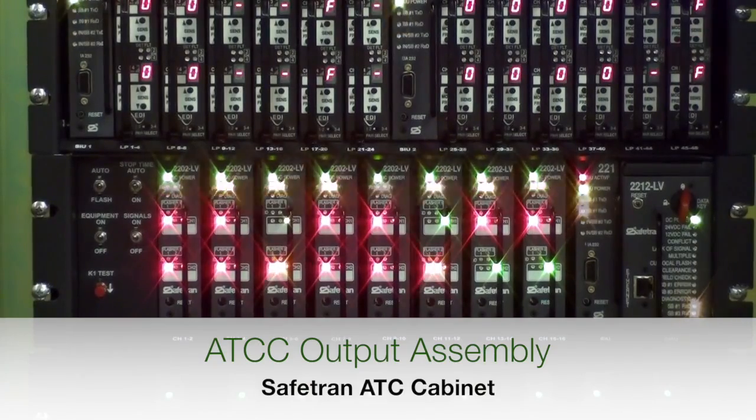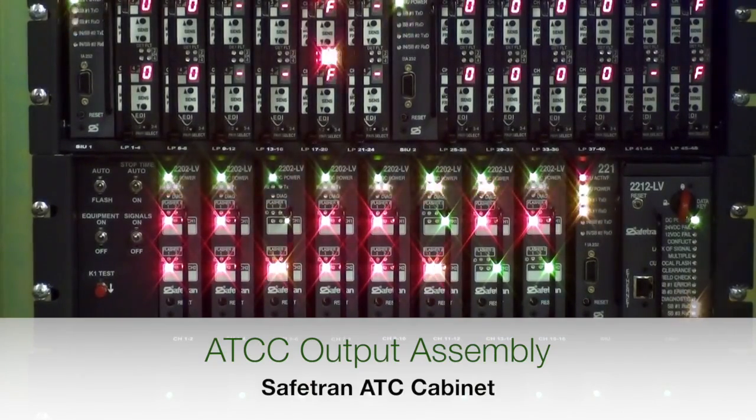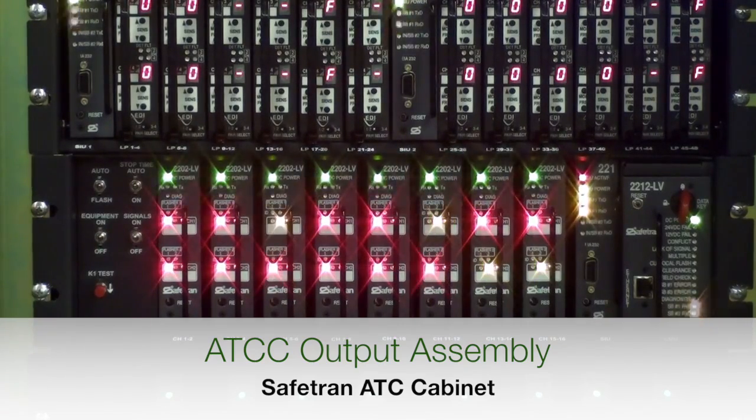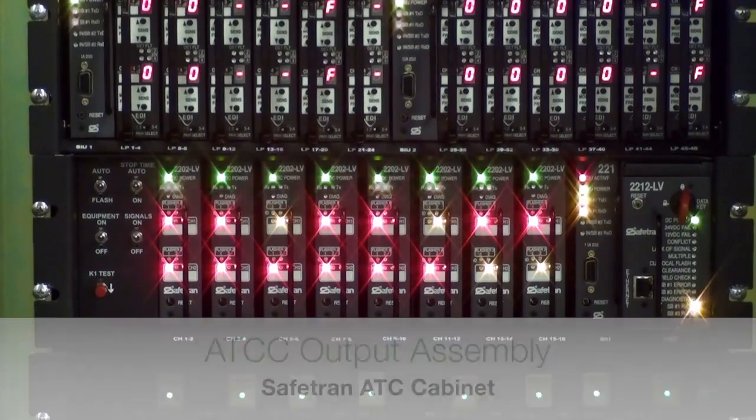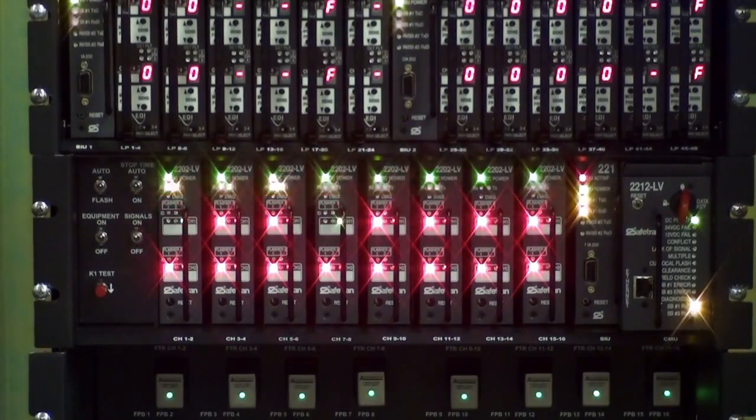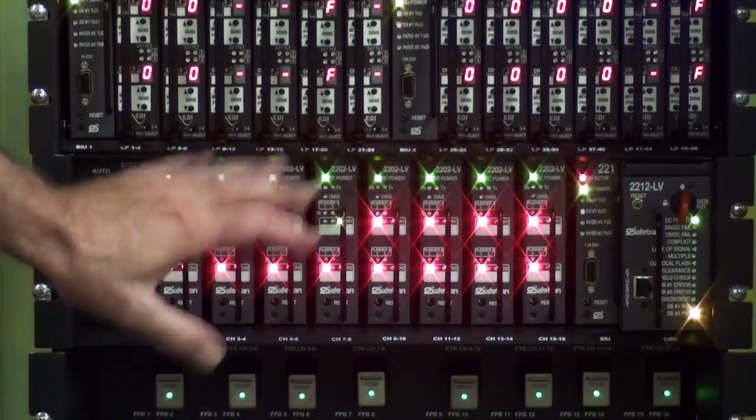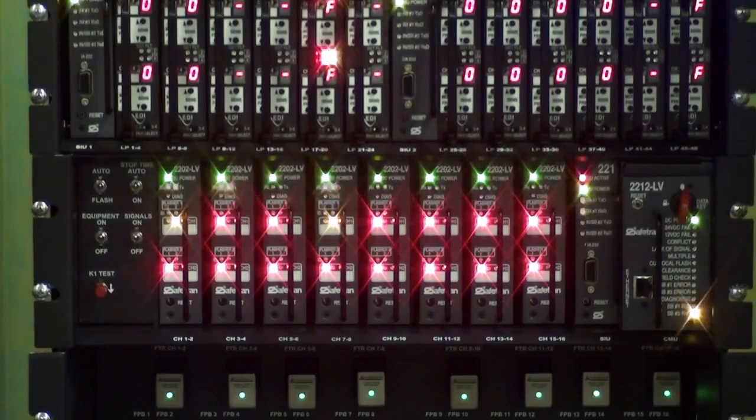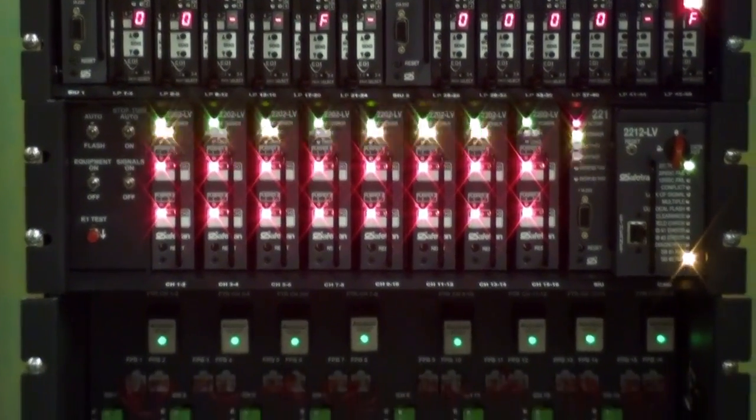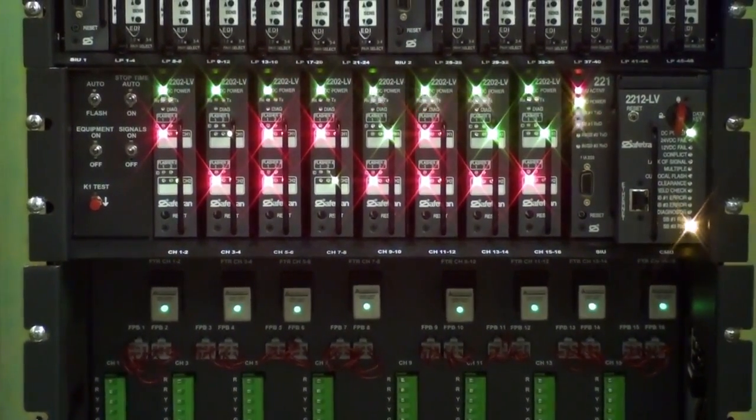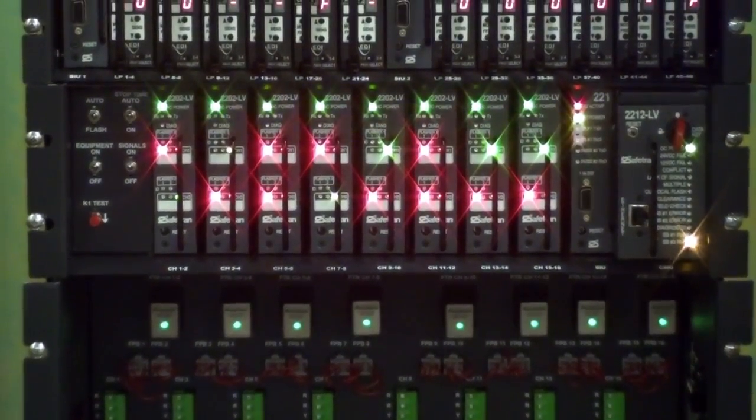The ATC cabinet supports up to 32 output channels. The new design replaces the standard large single-channel load switches with new dual-channel high-density switch packs, or HDSPs. Each SafeTran output assembly houses up to eight HDSPs, providing 16 output channels in a three-unit or three-U rack space. The user can install up to two output assemblies in the ATC cabinet.